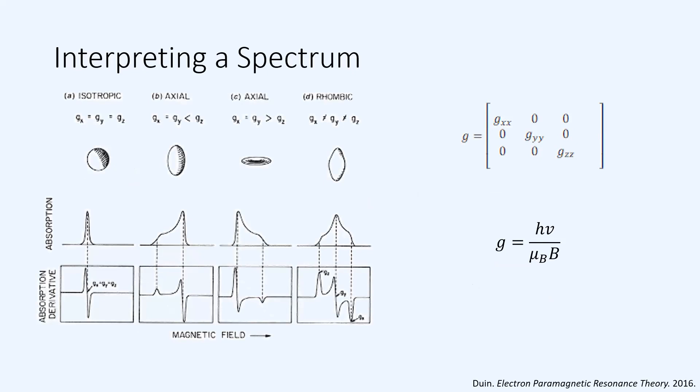However, in the presence of an actual electronic environment common to pretty much every biological system, we are going to encounter either an axial or a rhombic spectra.